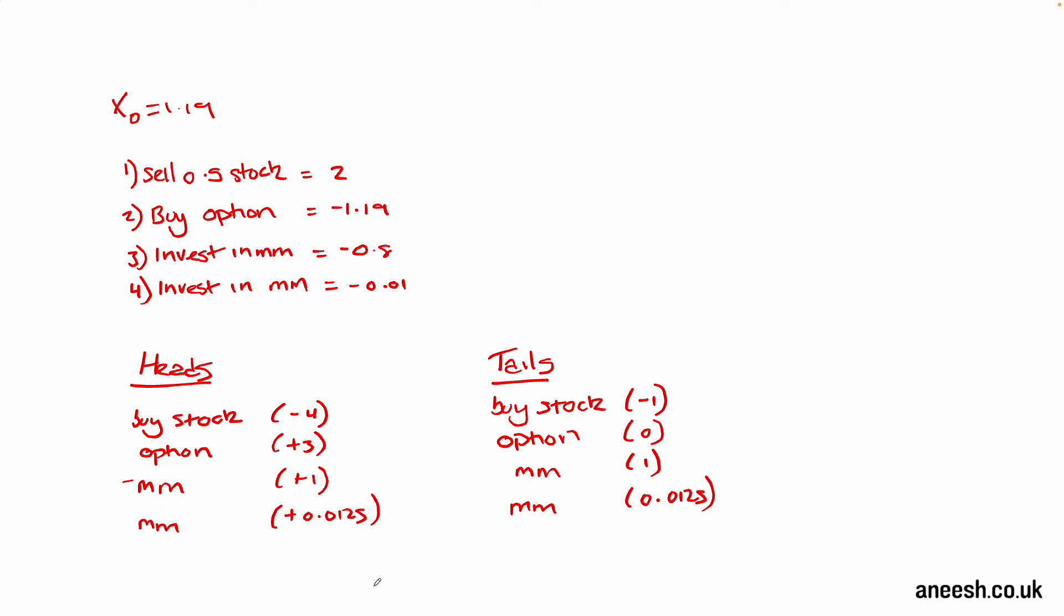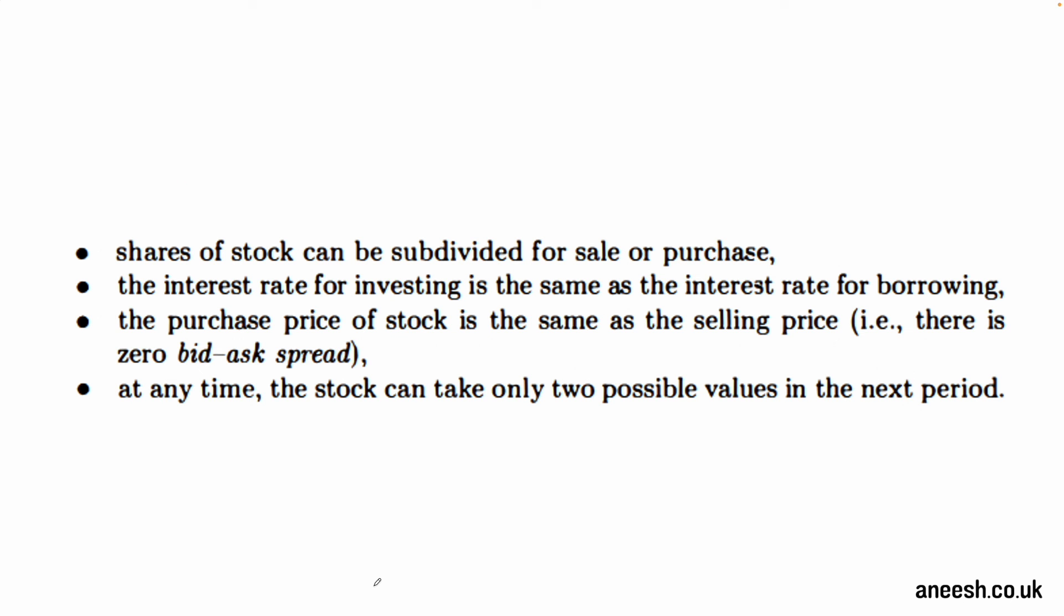To conclude the first part of chapter 1, we've shown some assumptions about our model. These are that the stock can be subdivided, for example we're assuming we can purchase half a stock; that the interest rate for borrowing and investing are equal; that we can buy and sell the stock for the same price; and that there are only two possible values for the stock at time 1, and that's what the binomial model is all about. These assumptions will be repeated throughout the book, but for now we've seen how the European call option can be replicated assuming the binomial price movement.